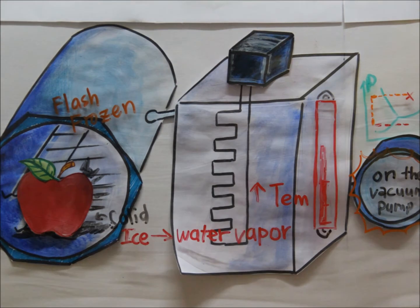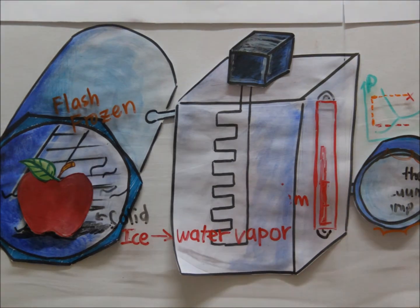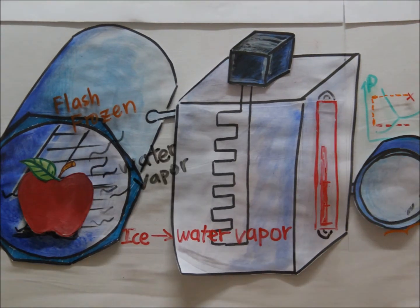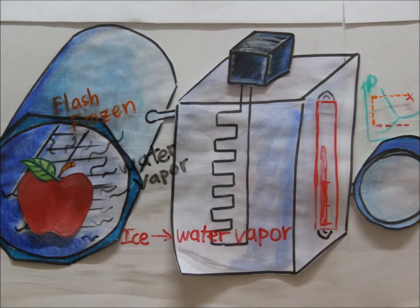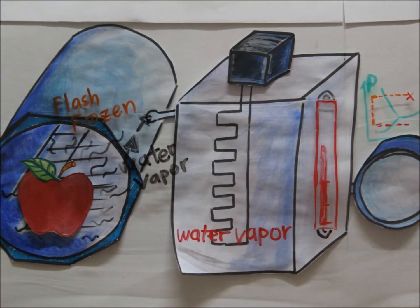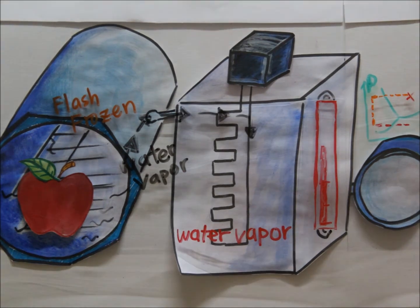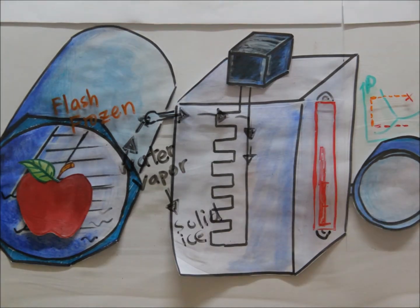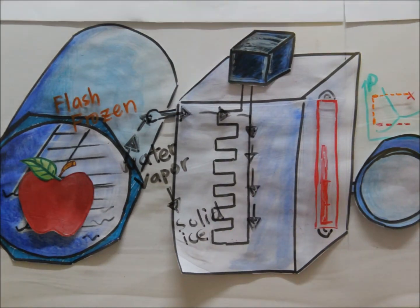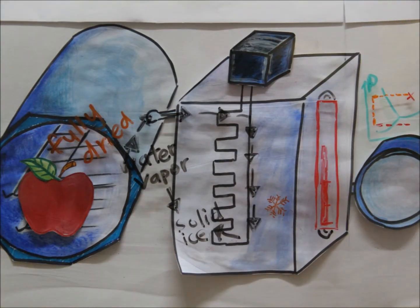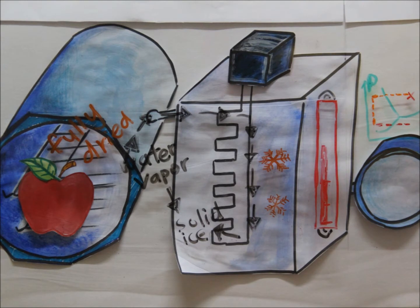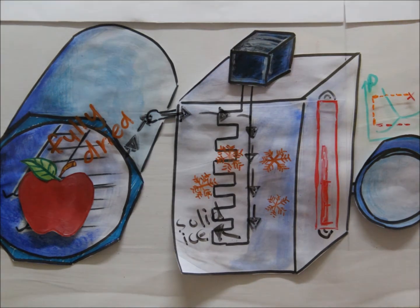At the same time, a small amount of heat is applied to the shelves to change the water molecules, which are in solid form, to vapor. The water vapor flows out of the freeze-drying chamber and then sublimes onto the freezing coil, where the molecules of water change back to solid ice form, like frost.